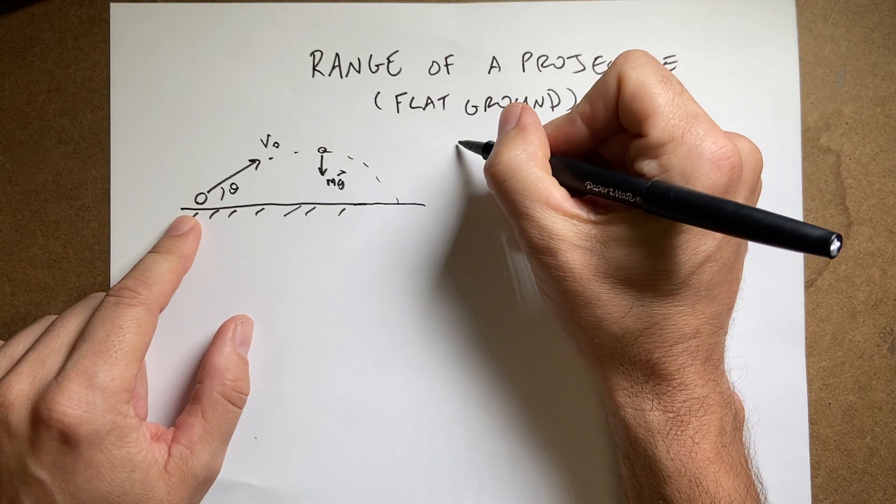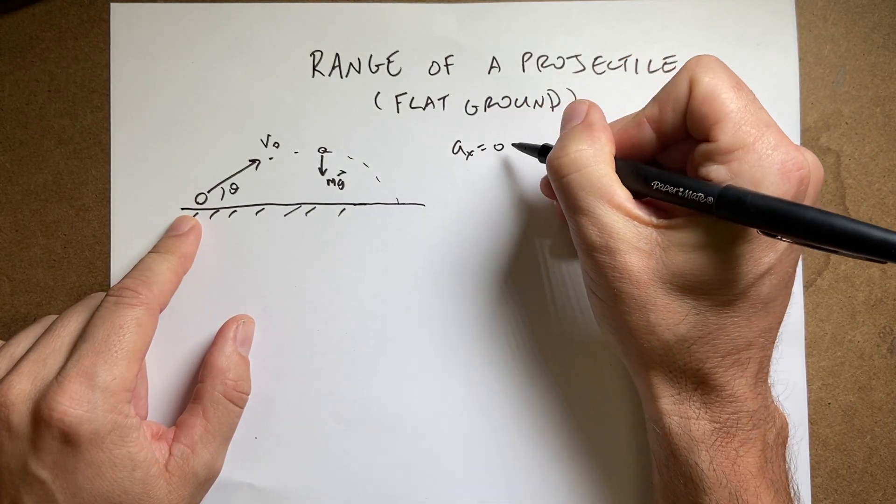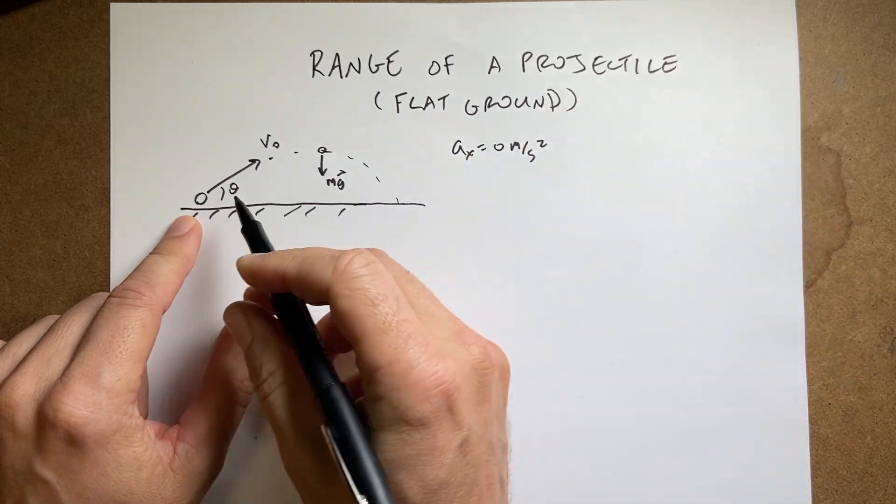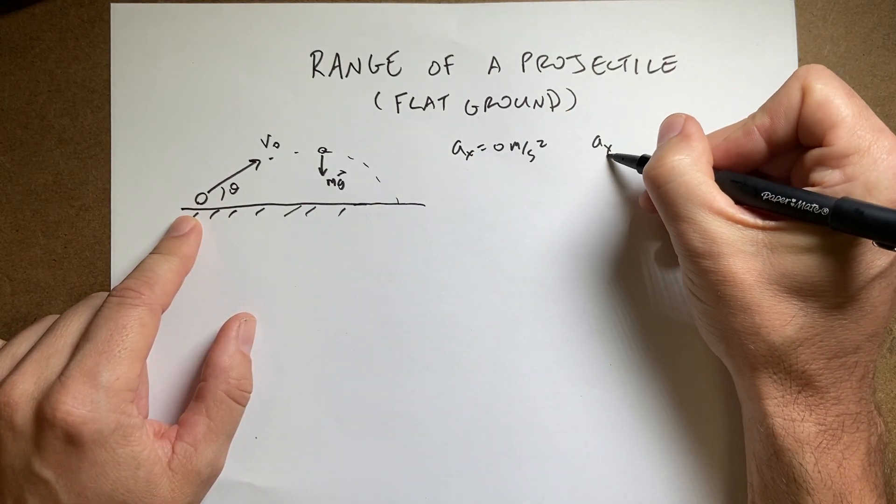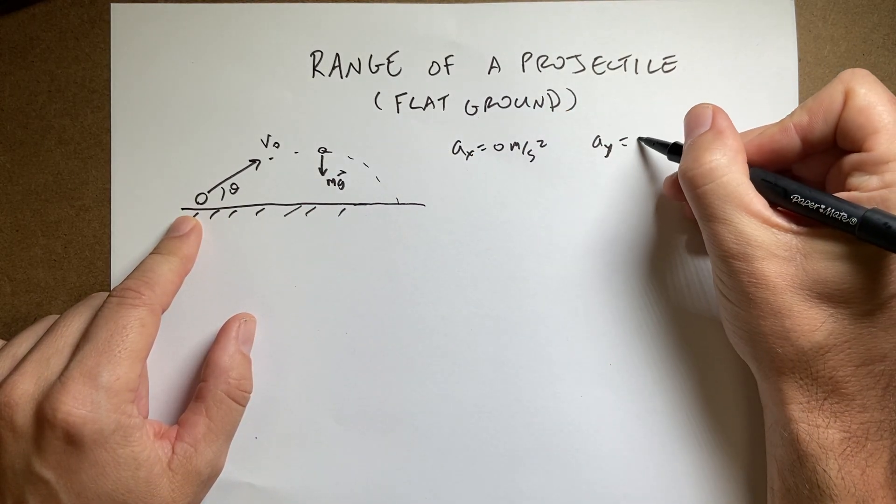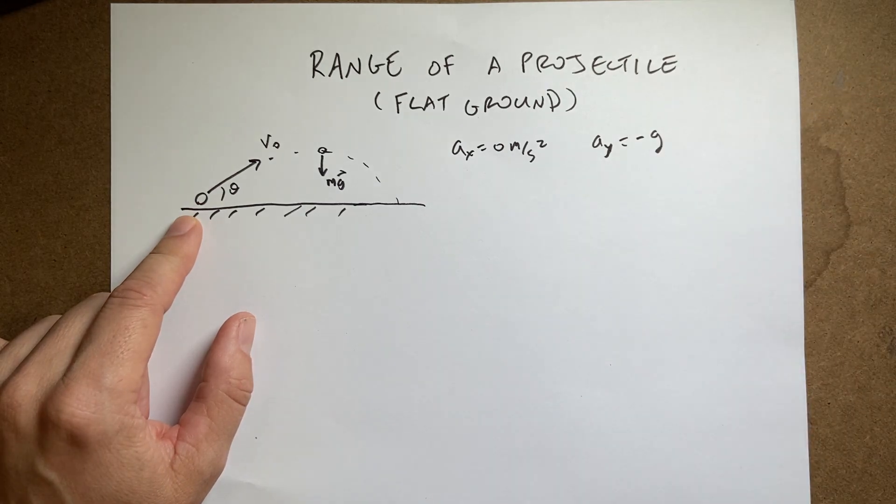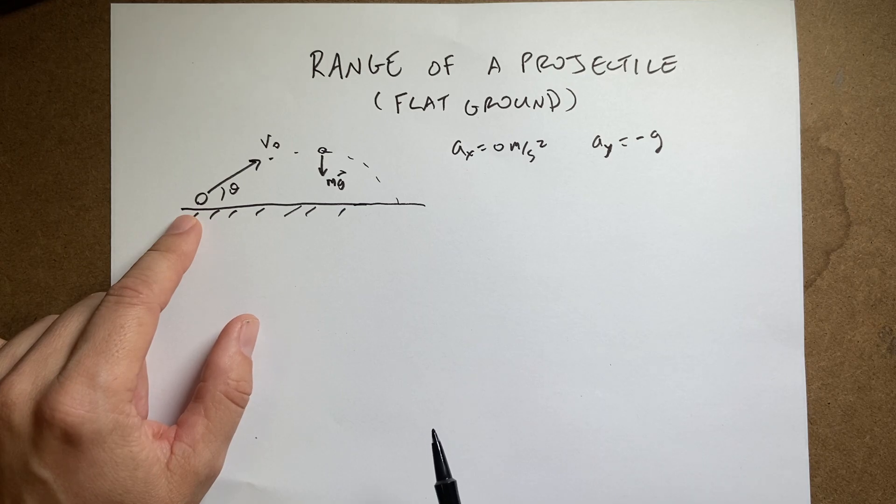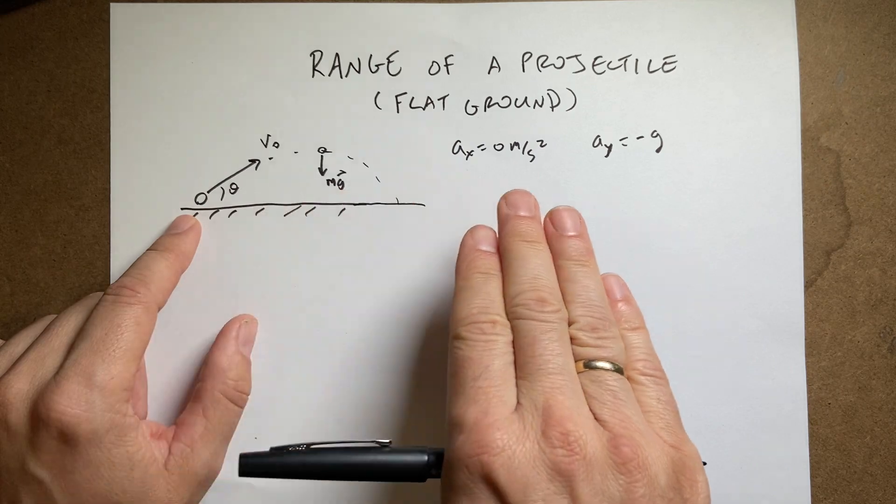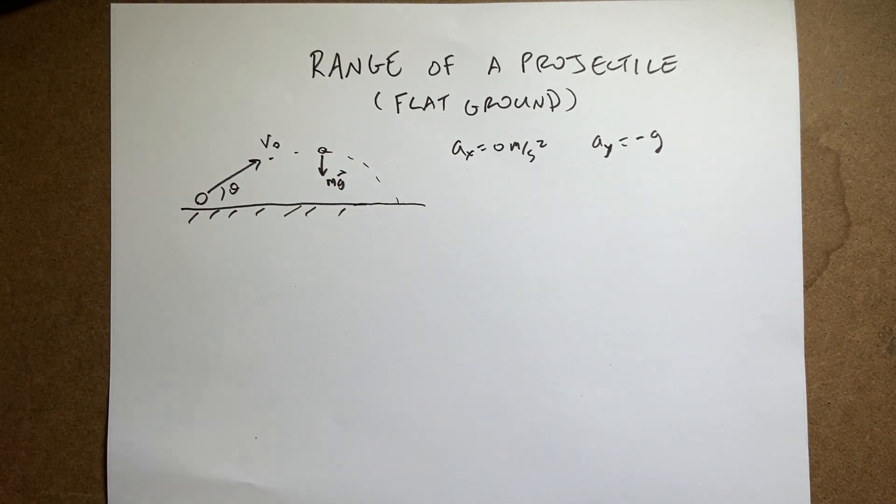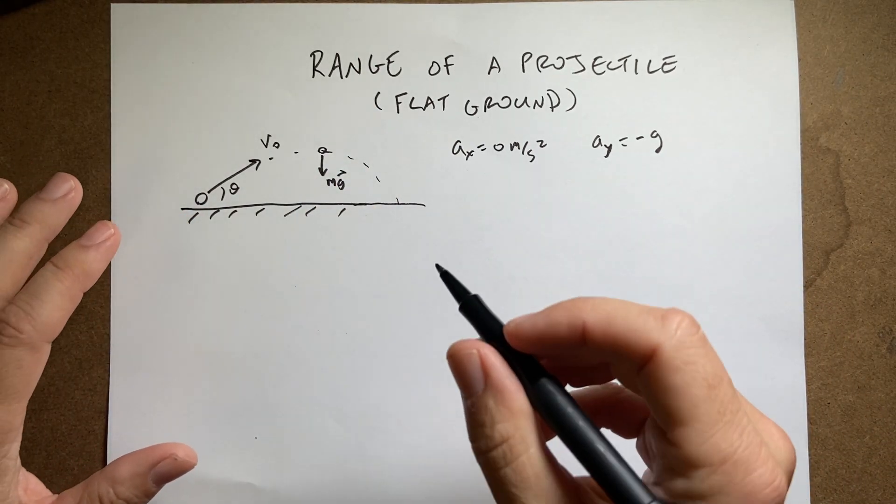This means that the acceleration in the x direction is 0 meters per second squared because there's no forces. The acceleration in the y direction, that's ay, is negative g where g is 9.8 meters per second squared. So when we deal with projectile motion, we really have two problems. We have a problem in the x direction and a problem in the y direction. They're independent except for time.